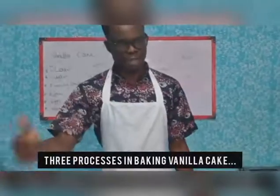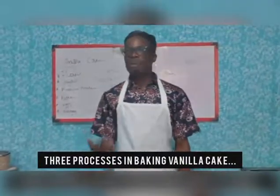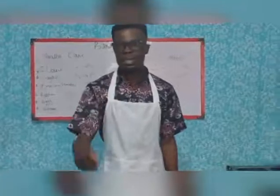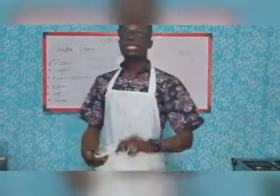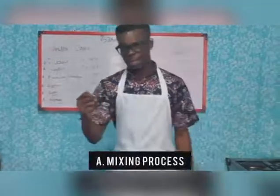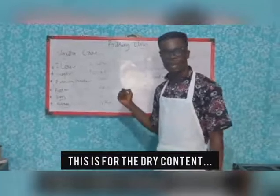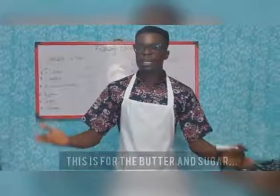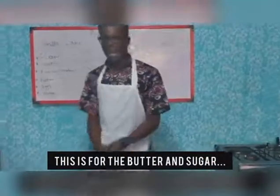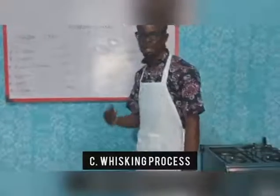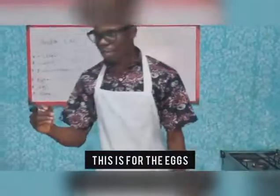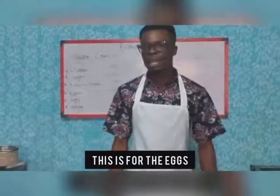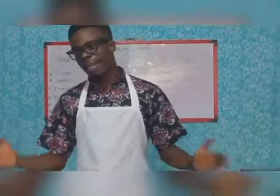We have three bowls, and in the same way we have three processes in baking a vanilla cake. The first process is mixing — mixing the flour together with the baking powder. The second process is creaming — creaming your butter and sugar until fluffy. The last process is whisking — you whisk your egg until it's foamy. These are simple principles in baking that will make your baking easy.